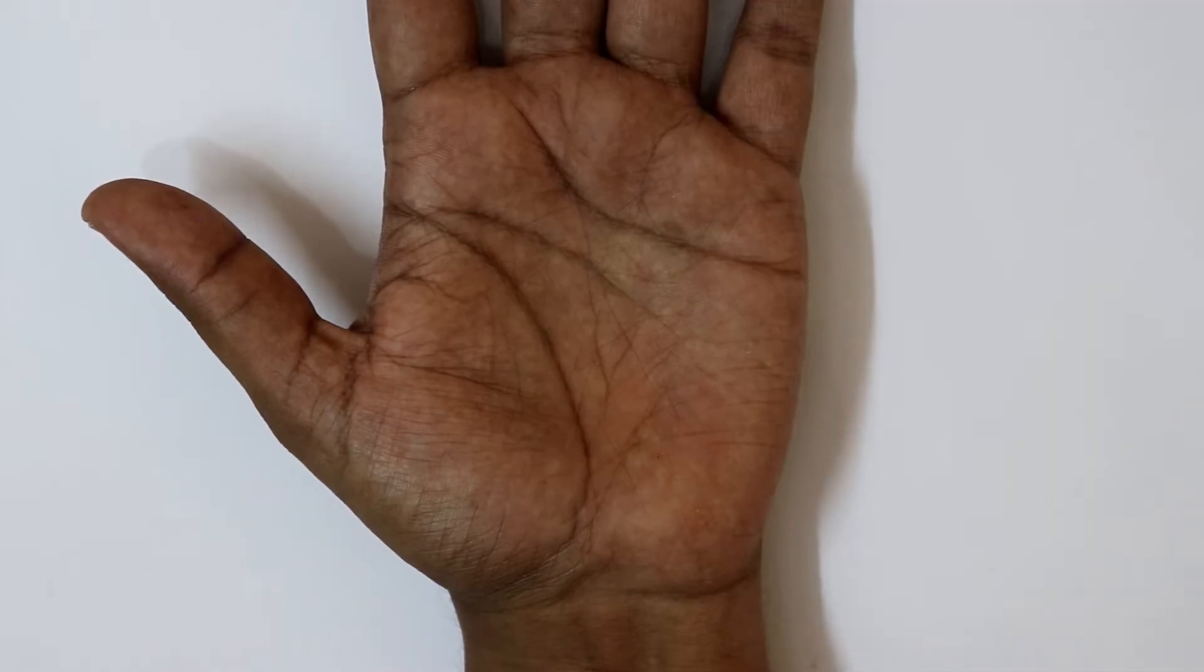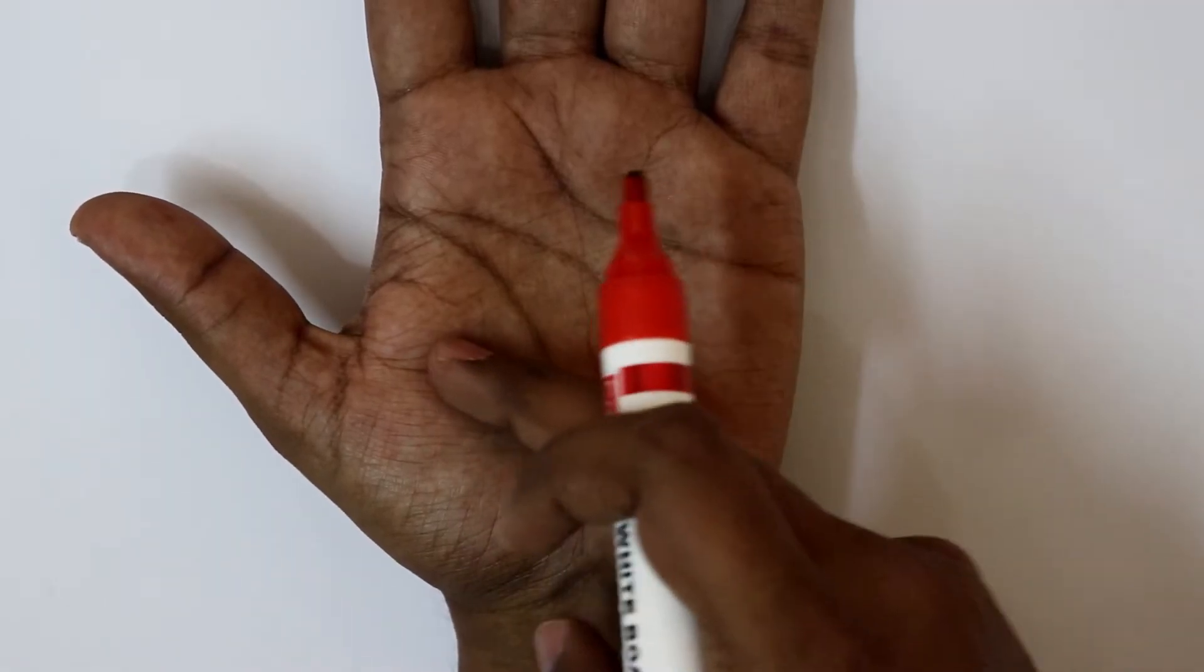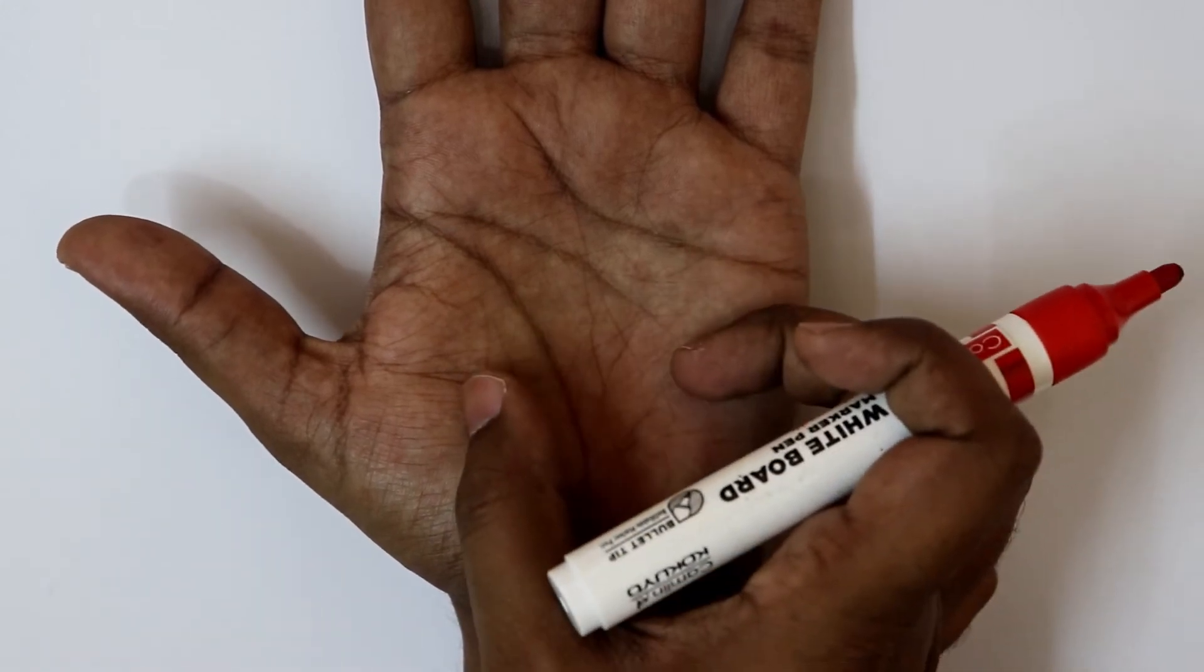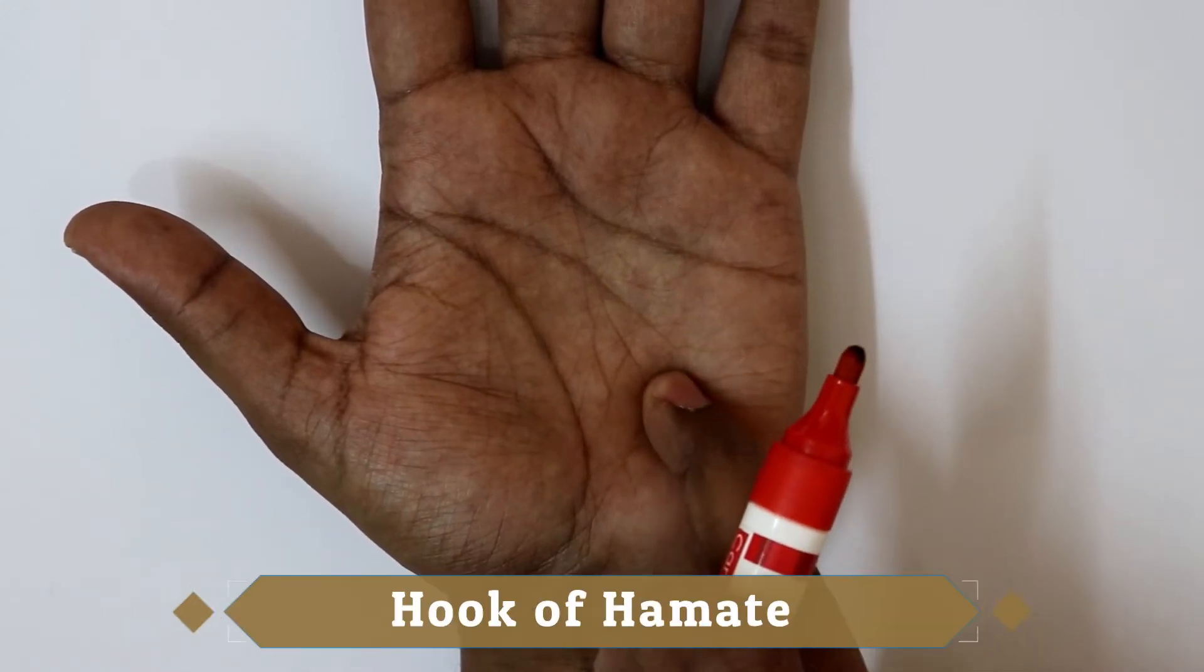For marking the deep palmar arch, we have to draw a horizontal line 4 cm long from a point just distal to the hook of hamate, extending towards the radial side of the palm.